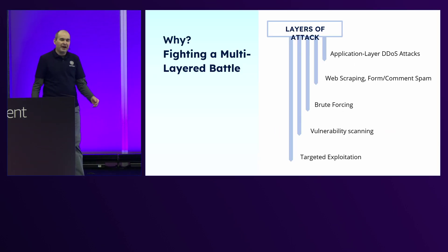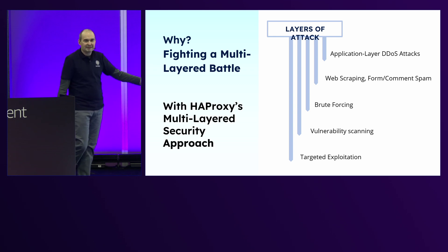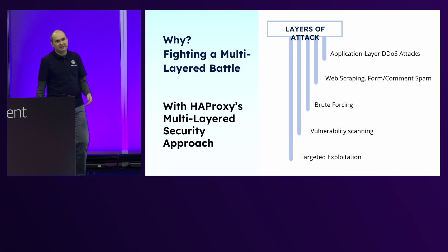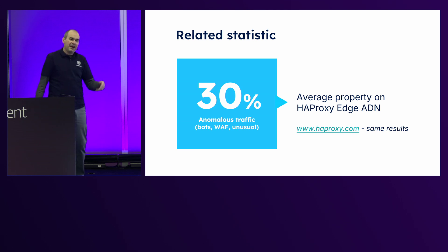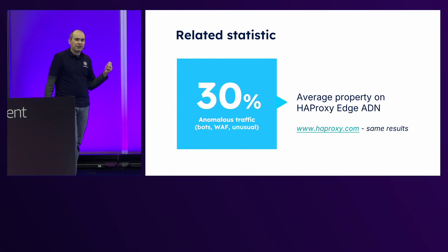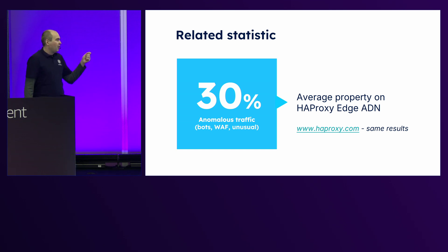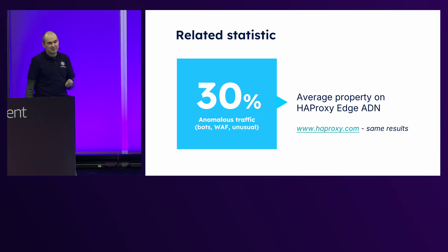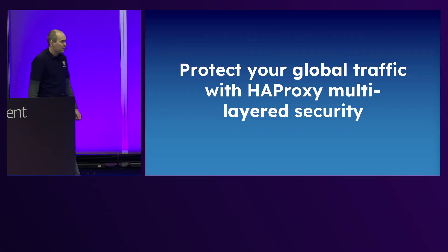Our customers fight a multi-layered battle and they fight it with our multi-layered security approach — from application layer DDoS attacks to web scraping, brute forcing, and scrapers. Now there are not only search scrapers but also AI crawlers, and they need to protect against those. There's also targeted exploitation — a single person trying to get through to a specific application. Across billions of requests a day on our own edge network, we see roughly 30% of traffic being anomalous: bots, unusual suspicious traffic, triggering the WAF.